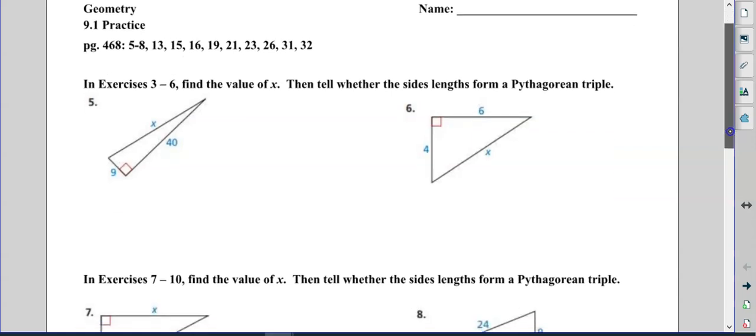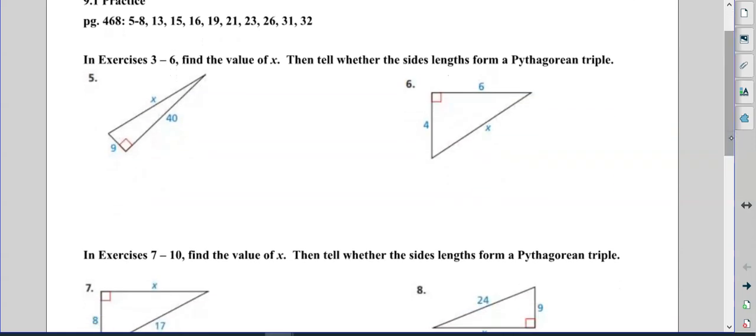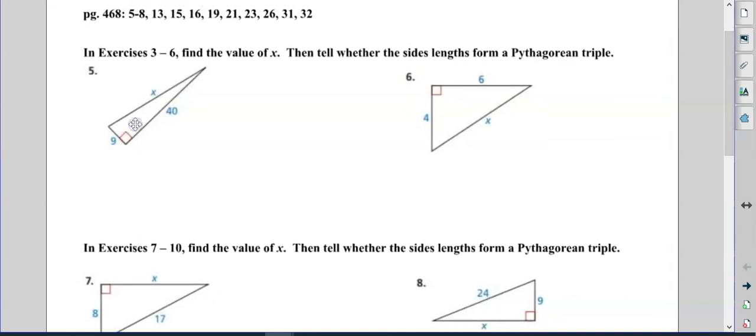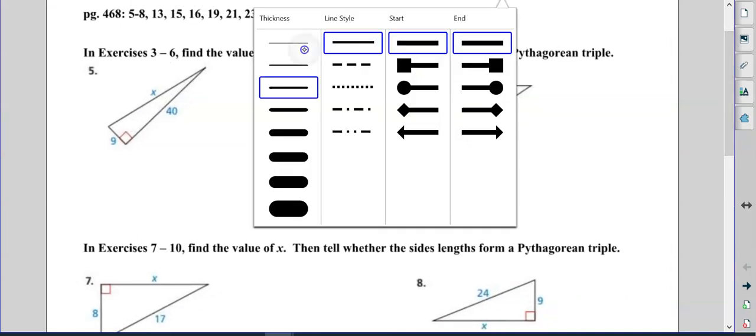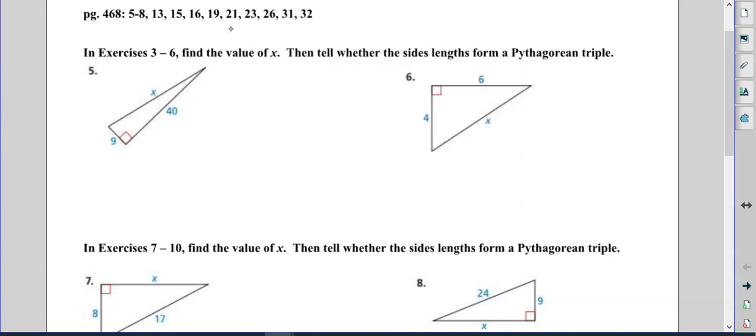Alright, so Pythagorean triples. I like to remind myself that the legs are interchangeable, but the c is the most important—that's the side opposite the right angle.